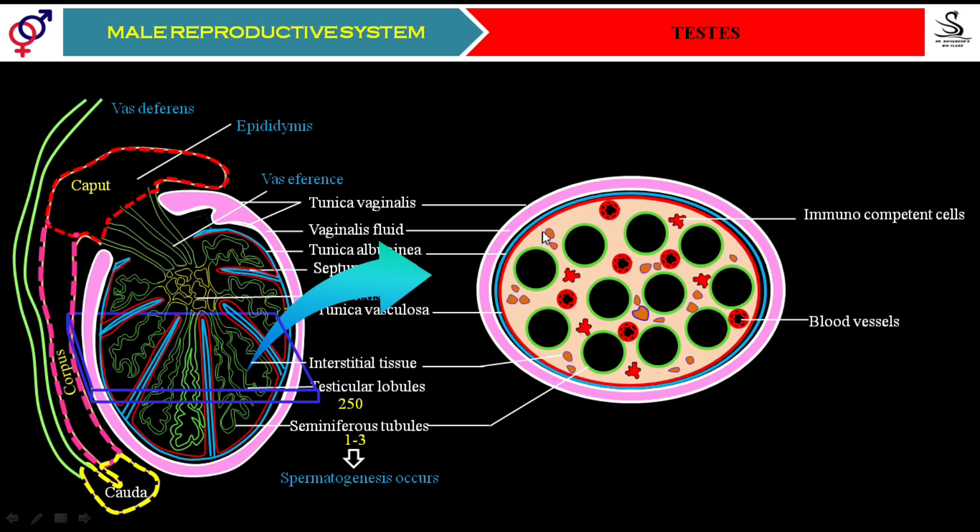These specialized cells are known as interstitial cells, or we also call them Leydig cells, because it was the scientist Leydig who gave us all the knowledge of these cells — what is their role, what they secrete, and what their functions are. All the details about Leydig cells were given to us by the scientist Leydig.